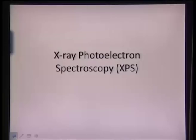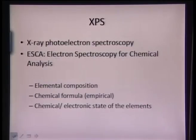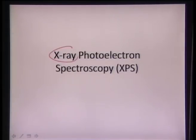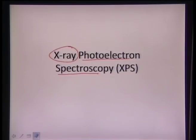In this lecture, we will learn about X-ray photoelectron spectroscopy. There are three terms: X-ray, photoelectron, and spectroscopy. We utilize X-rays to excite a particular material, then the photoelectron gets emitted from the surface, and from that we achieve a spectrum — that is spectroscopy. So we are utilizing X-rays, generating a photoelectron, and from the photoelectron achieving a spectrum to eventually find out the chemical composition of a particular material.